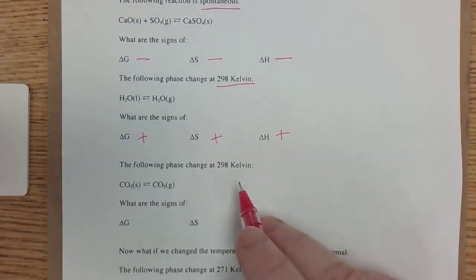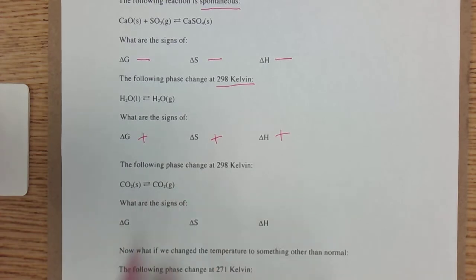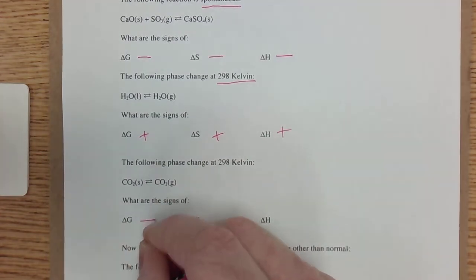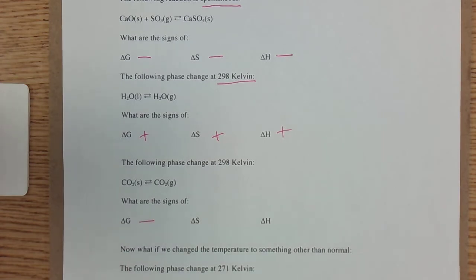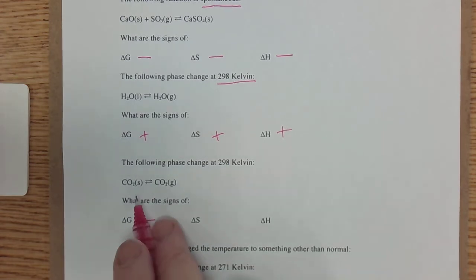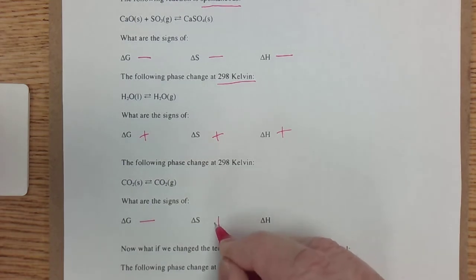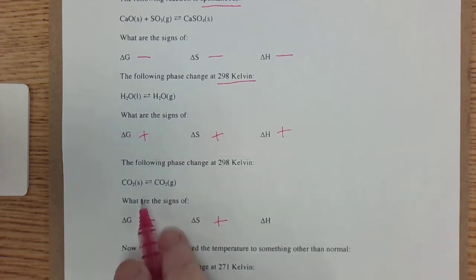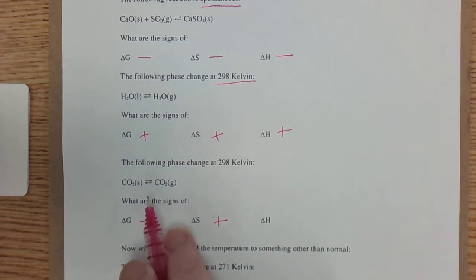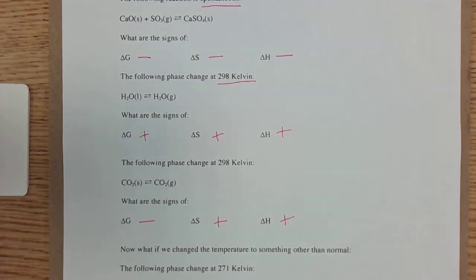Another phase change here. This is dry ice subliming. And we know that dry ice does sublime at room temperature, so that's spontaneous. ΔG is negative. When going from a solid to a gas, we have a massive increase in entropy. ΔS is positive. And how do we cause something to sublime? We put heat into it.